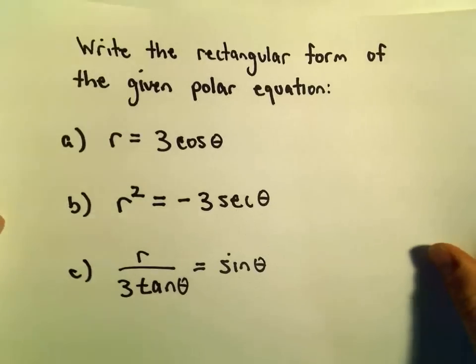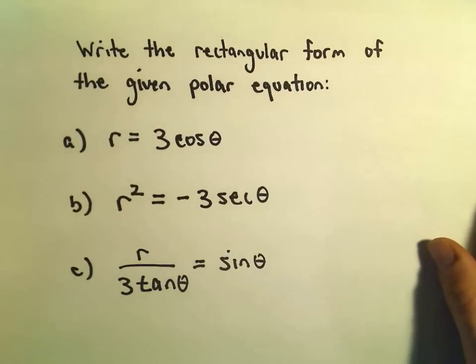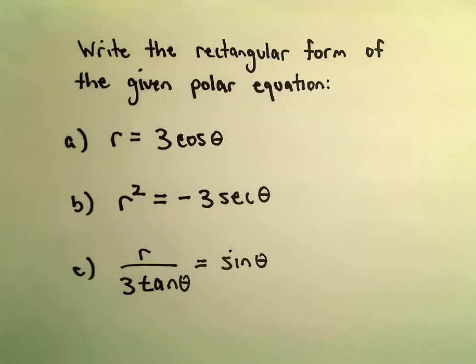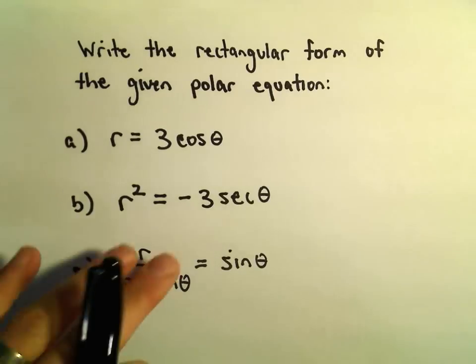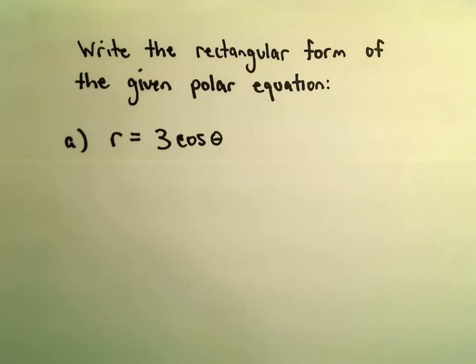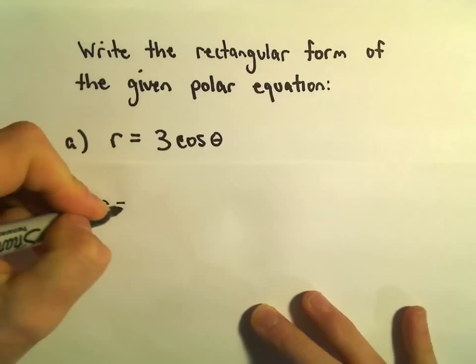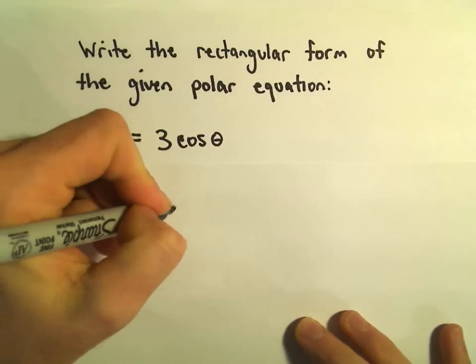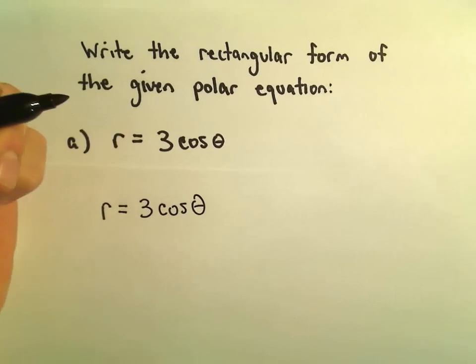We're going to find the rectangular form of each of these given polar equations. So the idea is, here we've got r equals 3 times cosine of theta.